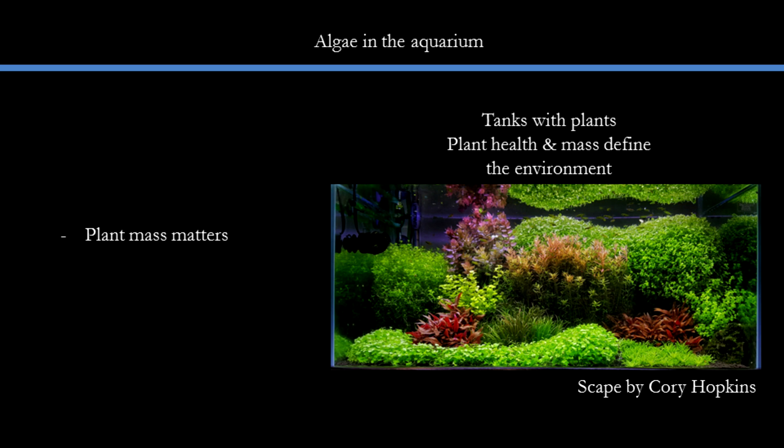Plant mass therefore matters. The more area of the tank covered by plants, the less area algae can make a home. However, if the plants are not growing well — if they are melting or deteriorating — then they become the reverse: algae magnets instead. Keeping a fully planted Dutch-style tank algae-free is easy in that sense, as long as you have enough skill to keep the plants healthy and growing.